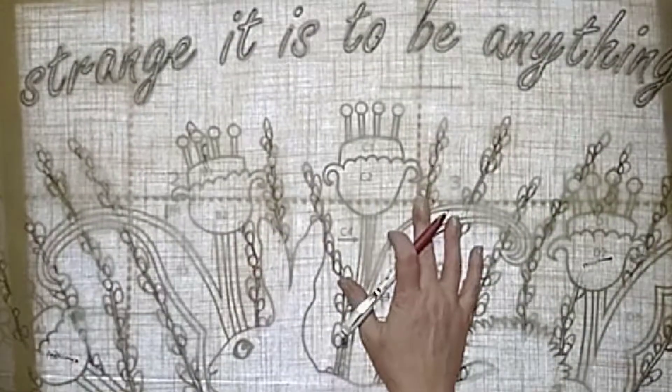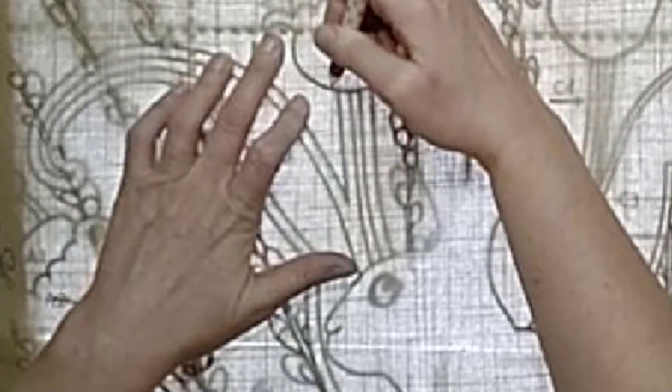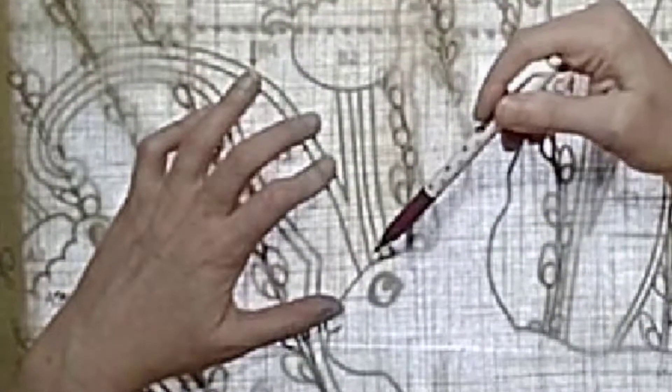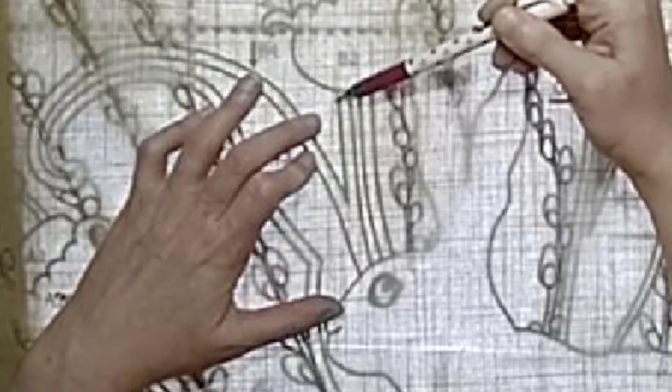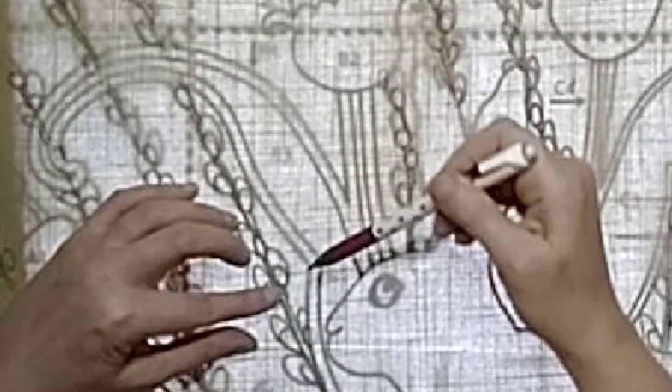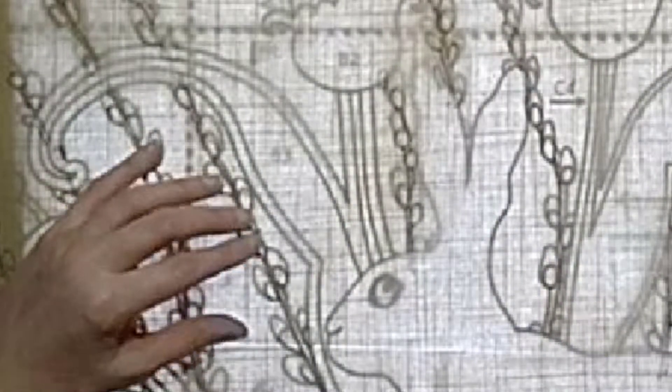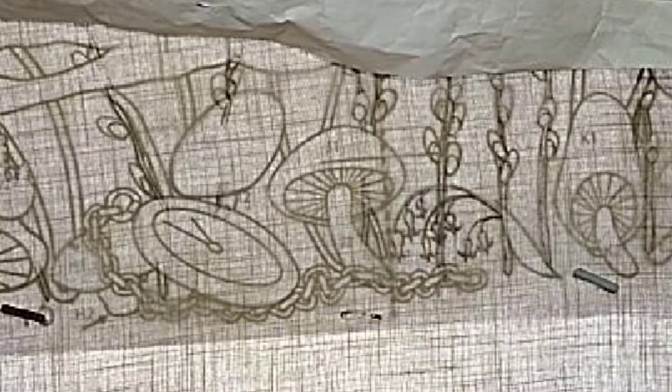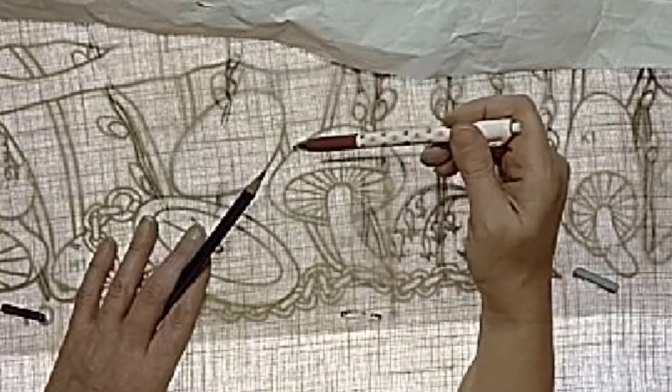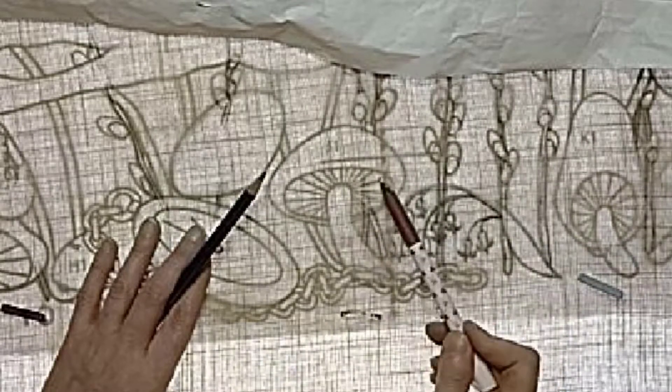For the parts of the raw edge applique elements that have layers, for example the tulips have the leaves and stems with a background layer and then an upper layer, and the mushrooms, some of them will have a mushroom cap with the stem that overlaps it, and the pocket watch has a face that goes on top.